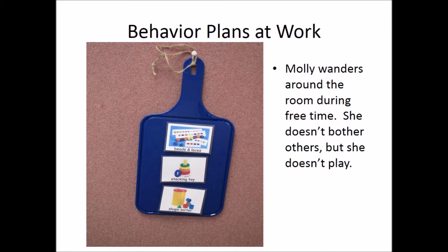It was determined that Molly did not have the communication skills to ask for something to play with. Her paraeducator provided a choice board with pictures of possible playtime activities. The pictures were Velcroed onto a dollar store cutting board, and Molly was taught to either exchange the picture for a toy or to simply point to the toy she wanted.